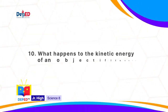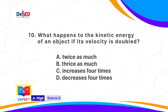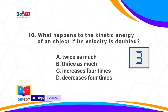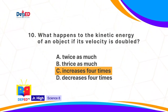What happens to the kinetic energy of an object if its velocity is doubled? A. Twice as much. B. Three times as much. C. Increases four times. Or D. Decreases four times. The correct answer is C: increases four times.